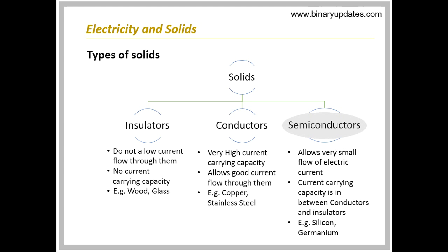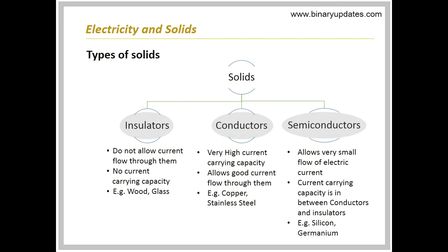The conductivity of semiconductor material lies in between insulators and conductors. Hence, they allow small current flow through them. Examples are silicon and germanium. The solids can also be categorized according to three electrical properties.